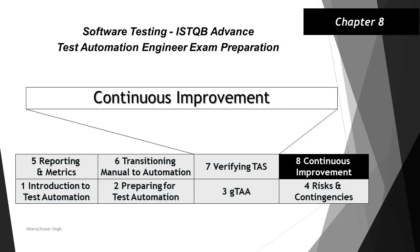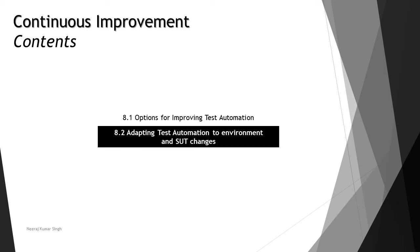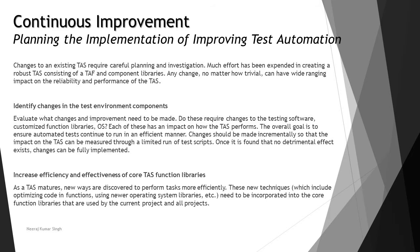Hello friends, and greetings for the day. Welcome back to the tutorial on ISTQB Advanced Test Automation Engineer. We are in chapter 8, looking at the last topic of this chapter: 8.2 - Adapting Test Automation to Environment and SUT Changes. This topic can also be considered the other way around, with respect to planning the implementation and improvement of test automation.